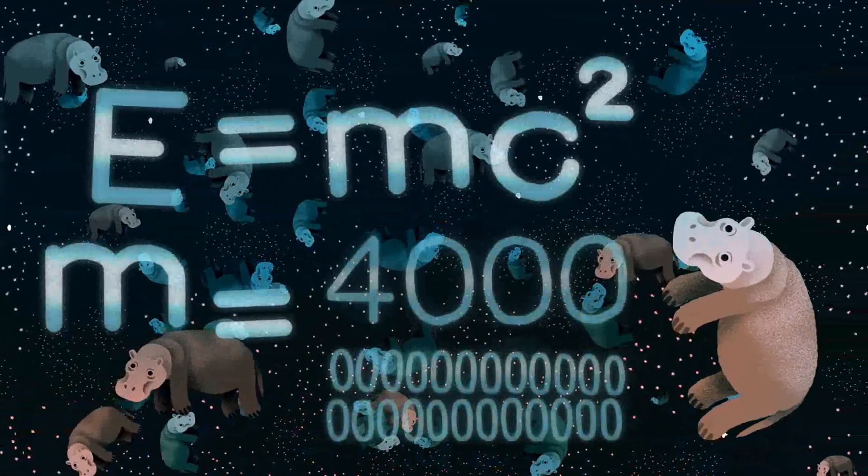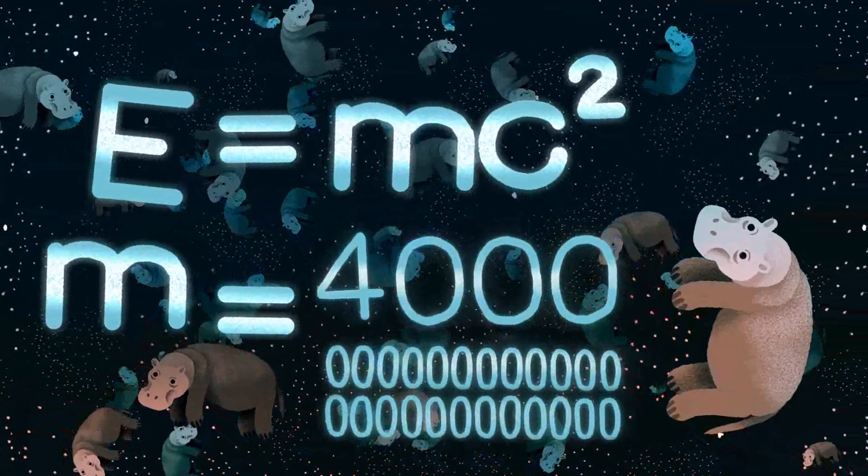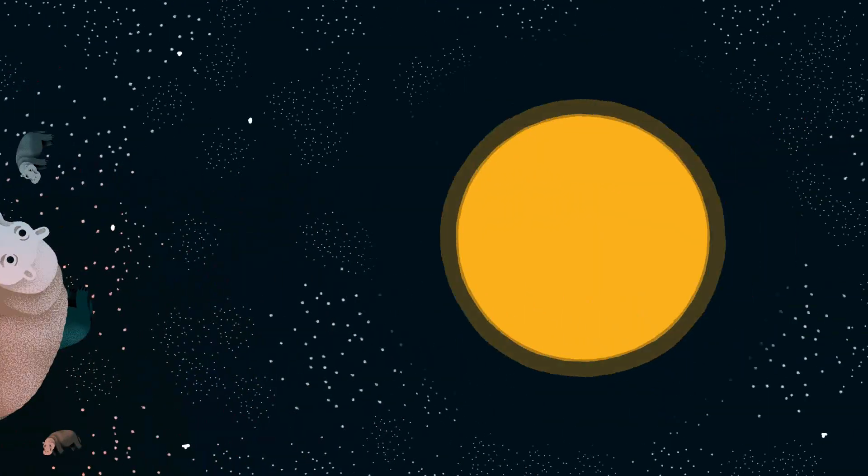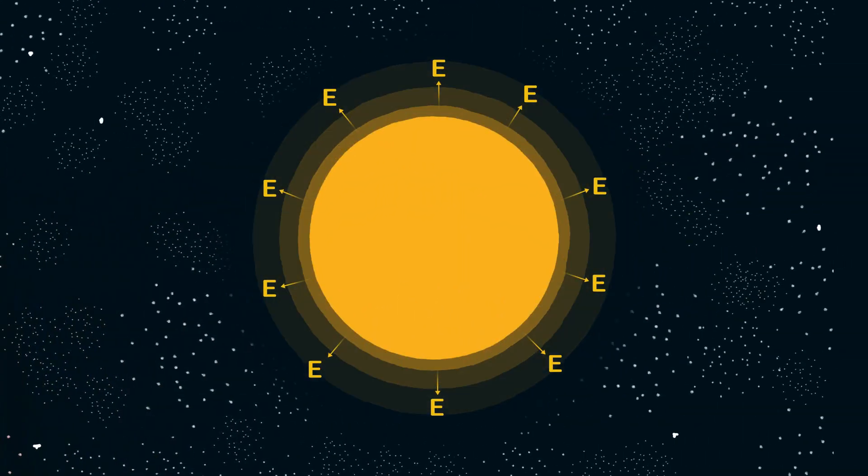So, fast forward 200 years and we have E equals MC squared and the mass of the Sun. Now we have the tools to work out how much energy is thrown out from the Sun.